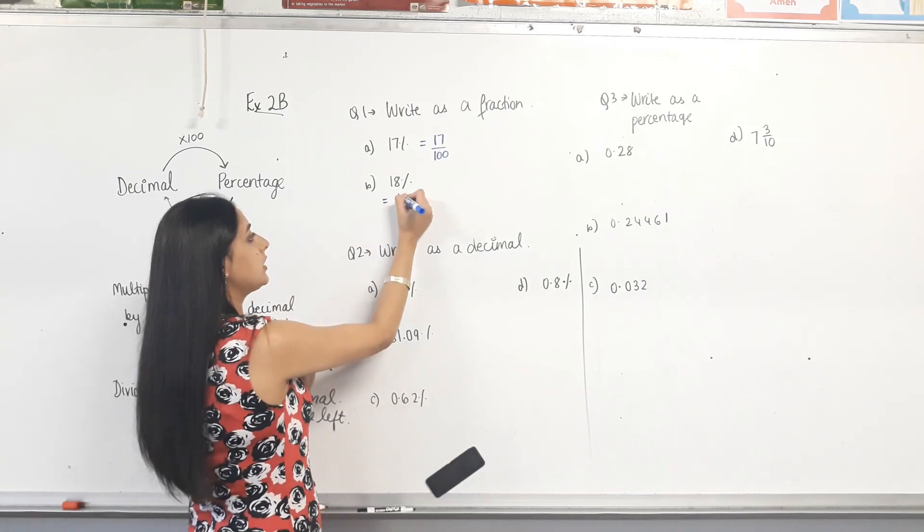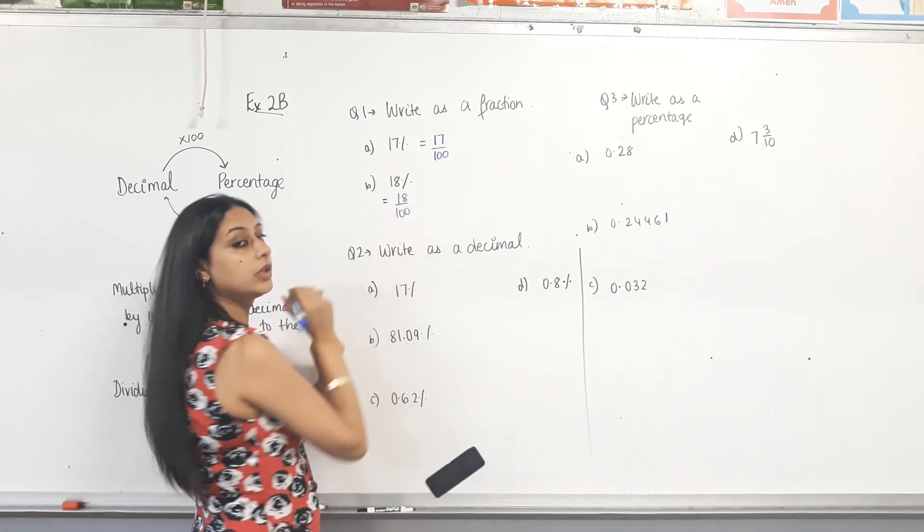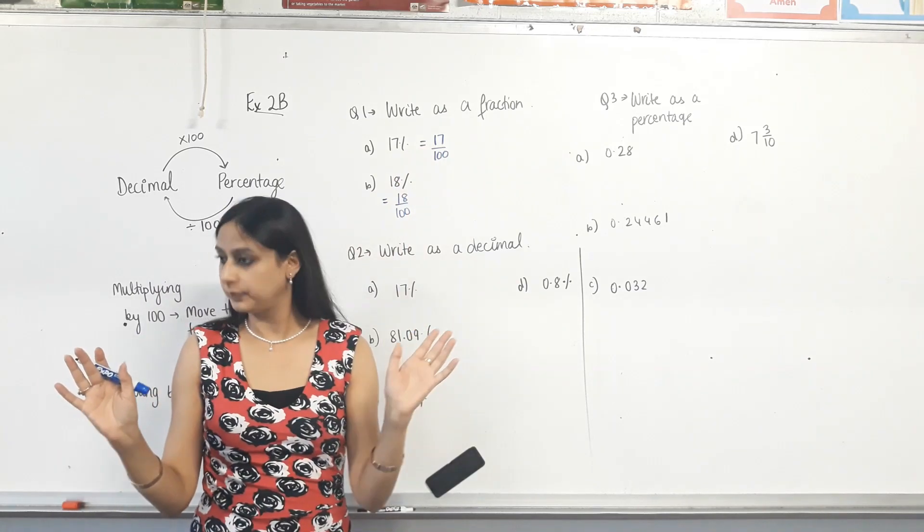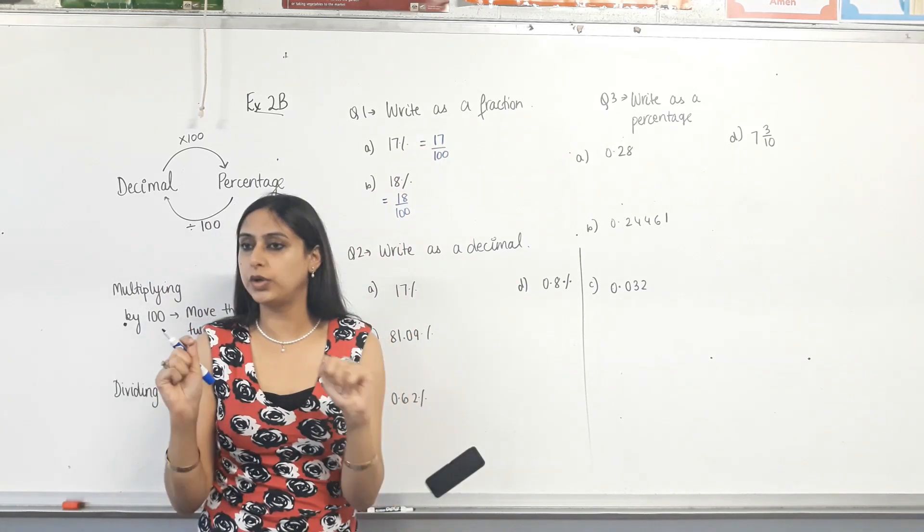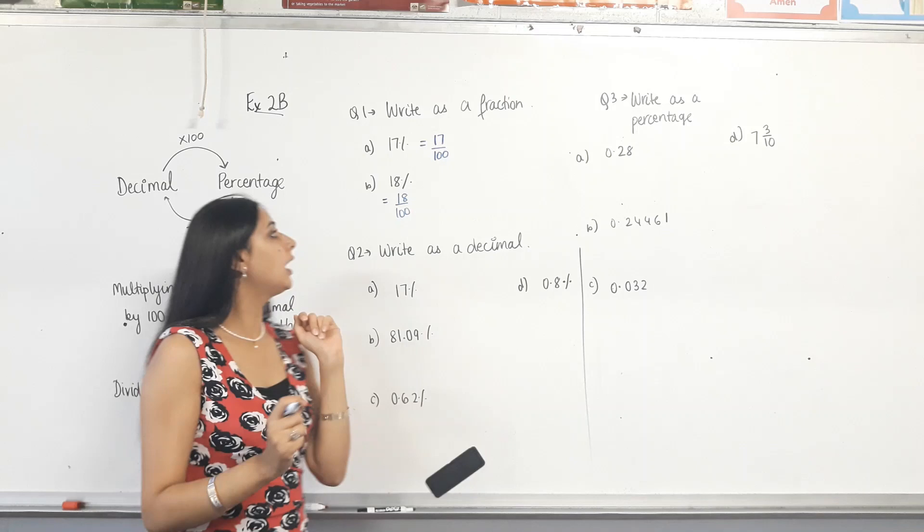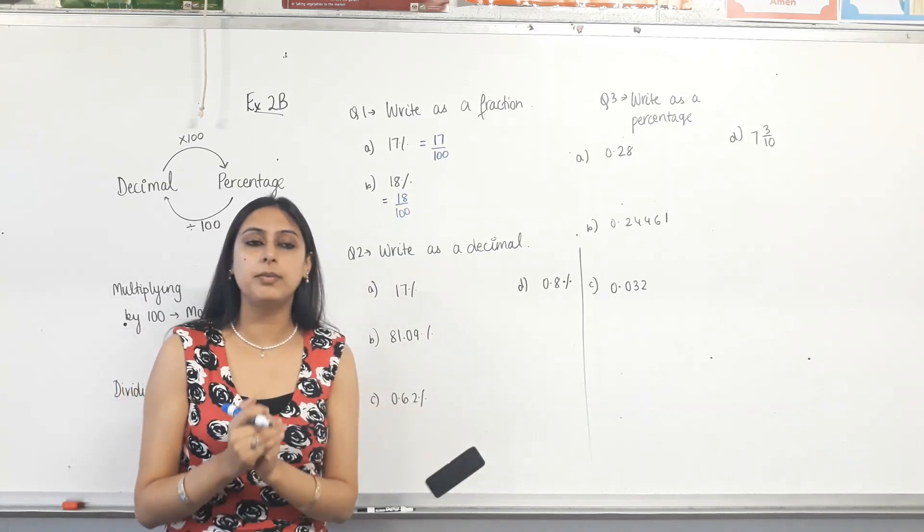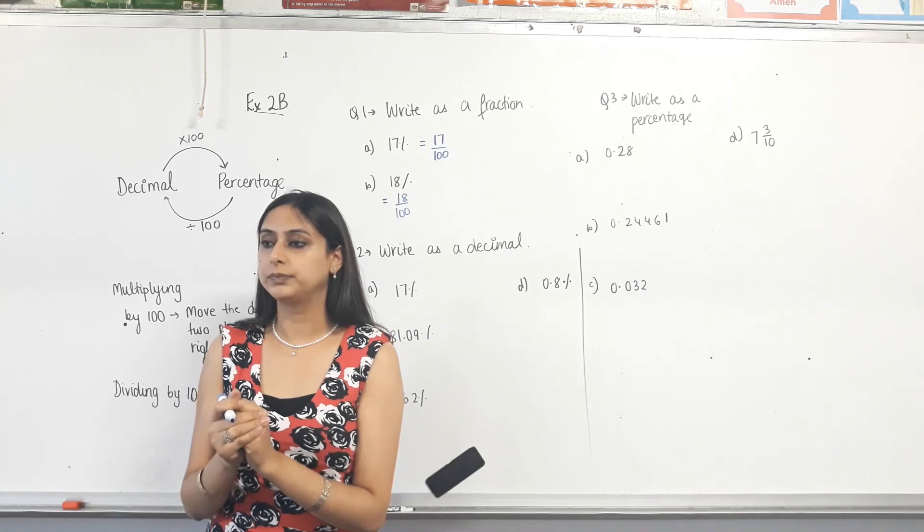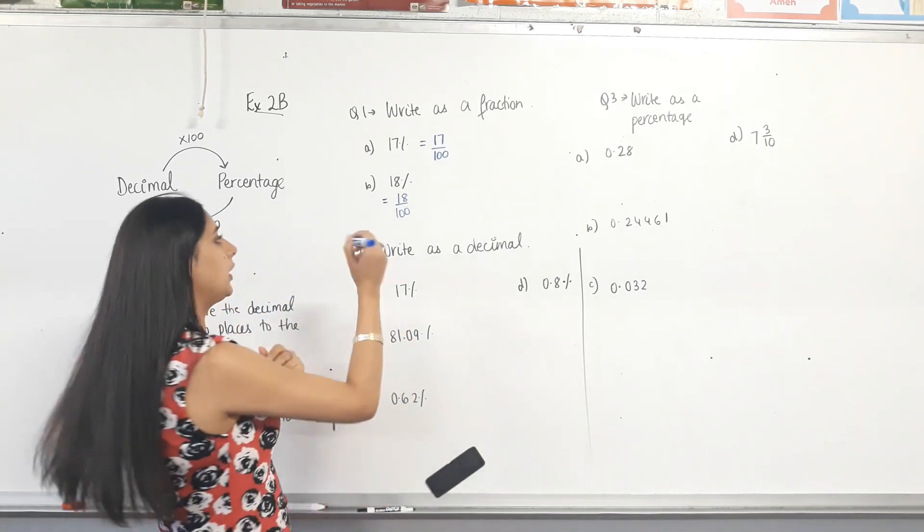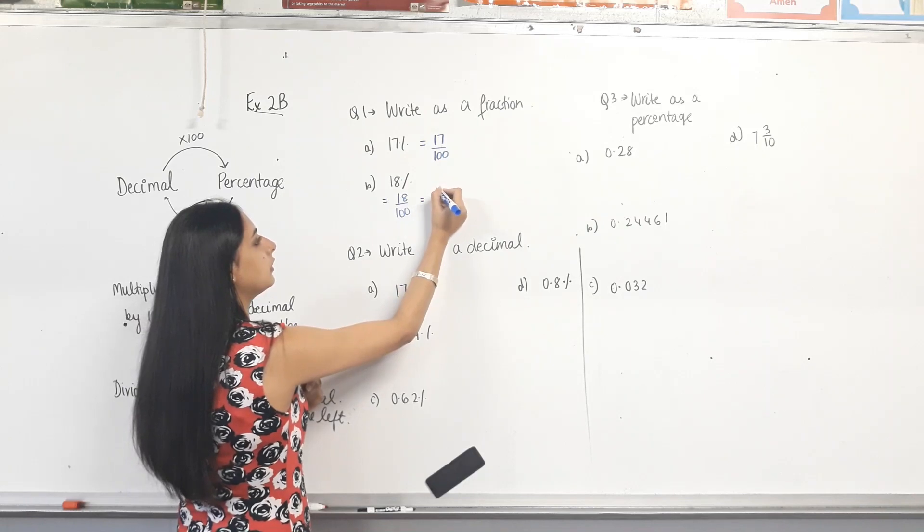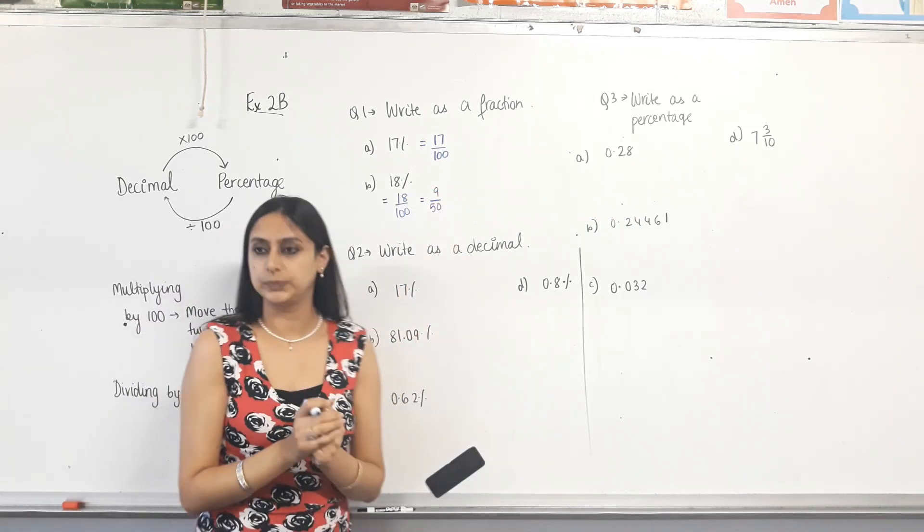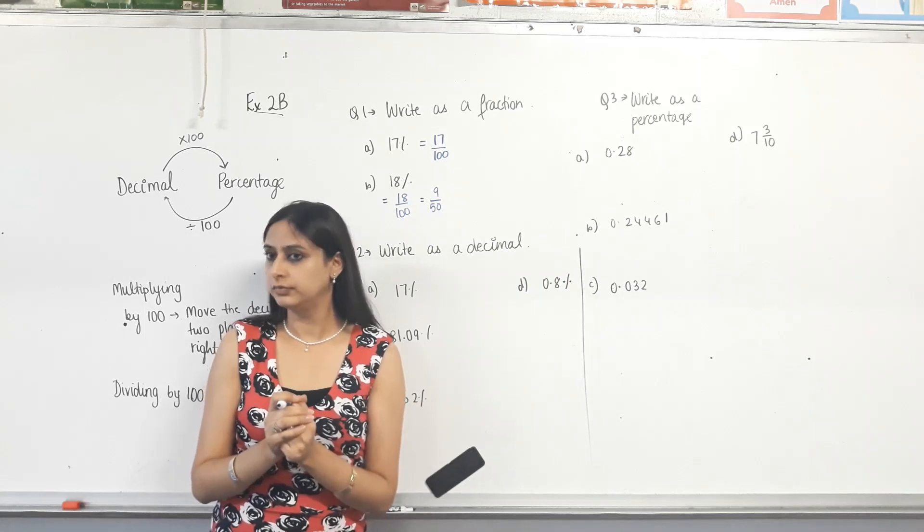Next one. Write it as a fraction. So 18 over 100. The moment you divide by 100, the percentage sign is gone. It's no longer a percentage, and that's what you need to be mindful of. Now, 18 and 100, they have a number that they're both divisible by. What number is that? 2. So 18 divided by 2 is 9, and 100 divided by 2 is 50. And I think that's it.